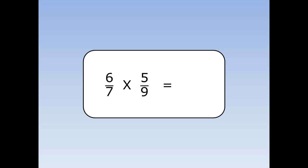6 sevenths times 5 ninths. 3 divides into 6, and 3 also divides into 9. So divide them both by 3. 6 divided by 3 is 2. 9 divided by 3 is 3. Then continue as normal — top times top, bottom times bottom. 2 times 5 is 10. 7 times 3 is 21.